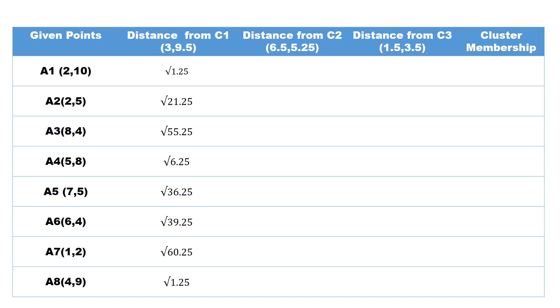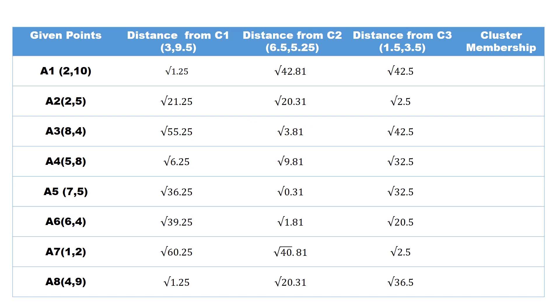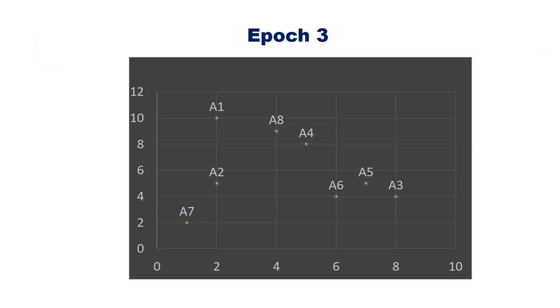Perform the third iteration. Calculate the distance between each point and the new cluster centroids: distance from (3, 9.5), distance from (6.5, 5.25), distance from (1.5, 3.5). Assign data points to the nearest cluster: A1 → C1, A2 → C3, A3 → C2, A4 → C1, A5 → C2, A6 → C2, A7 → C3, A8 → C1. After the third iteration: A1, A4, and A8 are in cluster 1; A3, A5, and A6 are in cluster 2; A2 and A7 are in cluster 3.